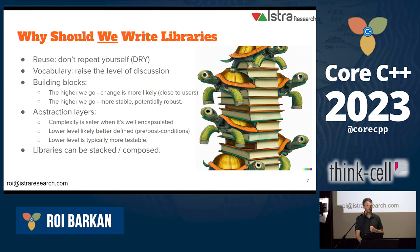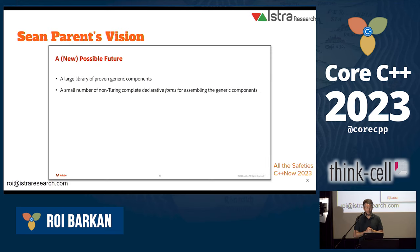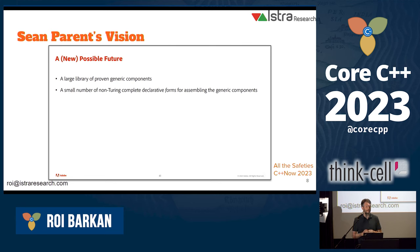Just last month I was at the CppNow conference, and Sean Parent gave a talk about writing safe C++ code and the future of C++. He envisioned a potential duality where our code should either be part of a large library of generic, proven components, or declarative forms of assembling those building blocks. He even suggested that the second layer might not need to be Turing complete — all the logic and big computations can be done in a library.